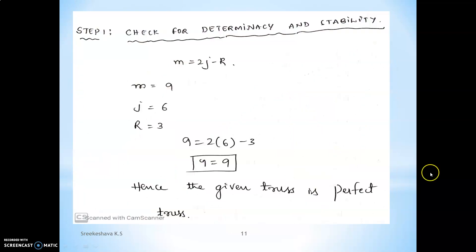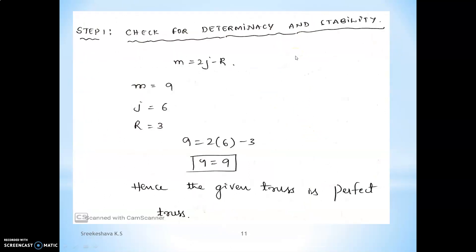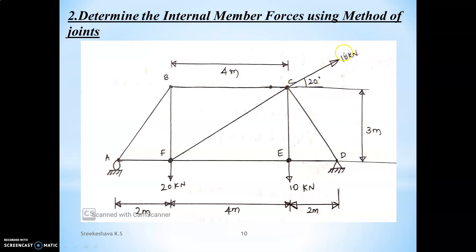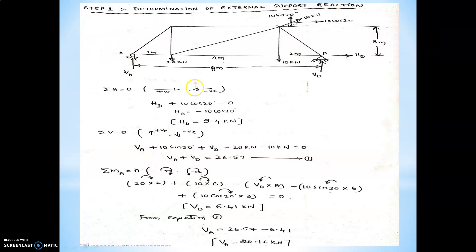Now we move on to the second problem. Step one: checking whether the truss is determinate or not — it's a perfect truss, no problem. Next, determination of external support reactions — this step is the same whether it is method of joints or method of sections. I have computed VA, VD, and HD — the horizontal reaction and vertical reactions — using the three equations of equilibrium. An inclined force of 10 kilo Newton is resolved into horizontal component 10 cos 20 and vertical component 10 sin 20.